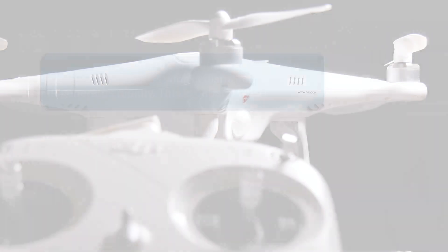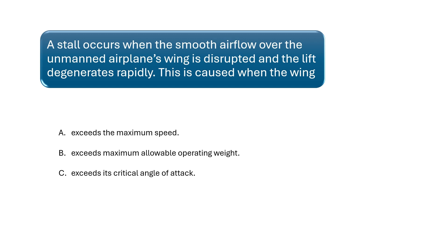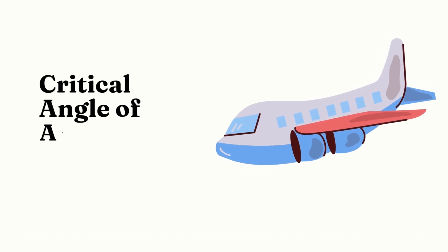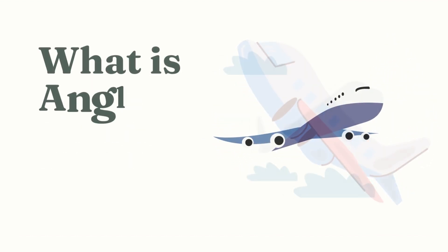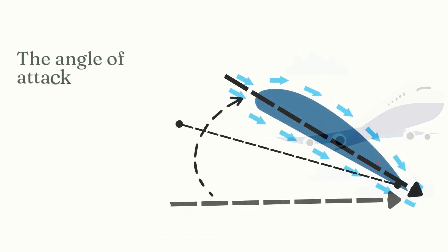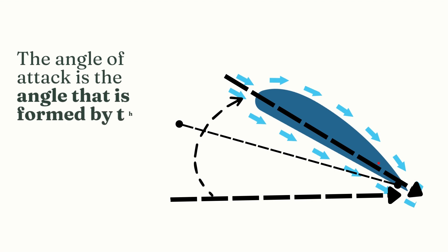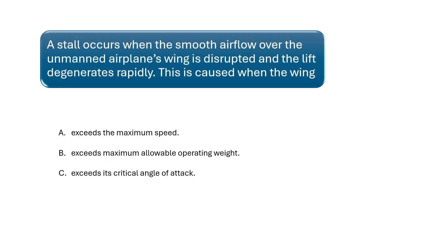A stall occurs when the smooth airflow over the unmanned airplane's wing is disrupted and the lift degenerates rapidly. To answer this question, let's do a quick review of what causes a stall. An airplane will stall when the critical angle of attack is exceeded. Angle of attack is the angle formed by the cord of the airfoil and the direction of the relative wind. The correct answer is C.